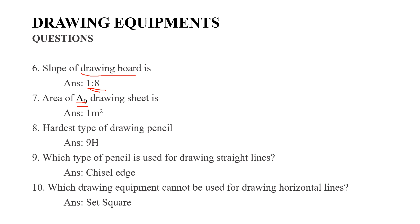Hardest type of drawing pencil. Drawing pencil hardest type is 9H. Answer is 9H. Next question: Which type of pencil is used for drawing straight lines? That is chisel-edge pencil.